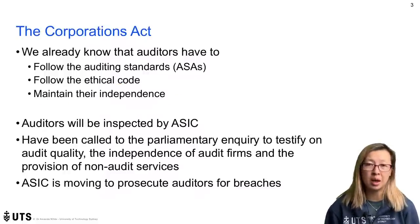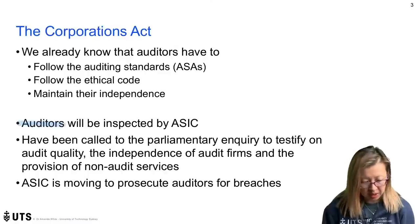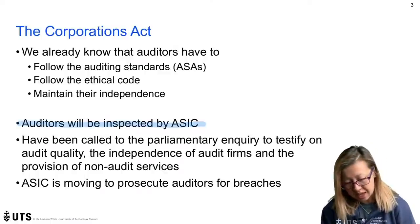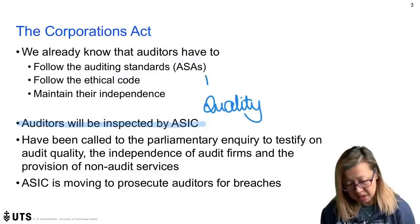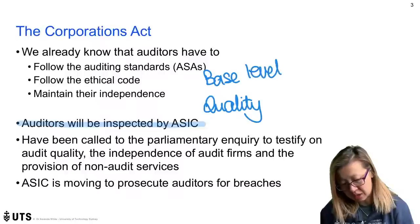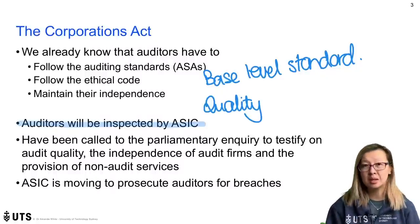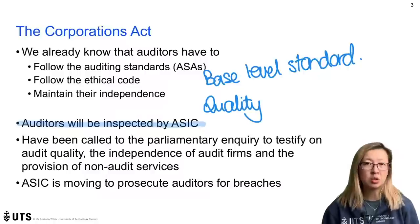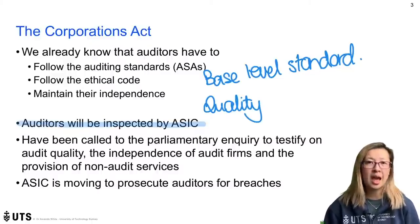Those are components we've talked about in previous modules, but there are new things to discuss today. The first is that auditors have to be inspected by ASIC to ensure they are following the rules and regulations under the Corporations Act and that everybody is providing quality audits — it's about meeting that base level of standard. You can actually go into the audit inspection reports that ASIC inspects and publishes, and there has been a call by the parliamentary inquiry into financial reporting and audit to have more information provided in those reports.